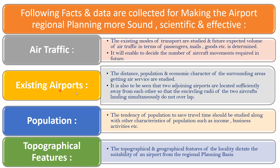The next fact is existing airports. The distance, population, and economic character of the surrounding areas getting air service are studied. It must also be ensured that two adjoining airports are located sufficiently far from each other, so that the minimum circling radius of two aircraft landing simultaneously do not overlap. Proper distance must be maintained between two airports so they do not interfere with each other.